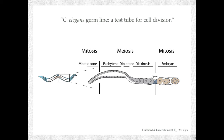C. elegans is mostly found as a hermaphrodite, meaning it can make both germ cells — both sperm and oocytes. In early development it creates sperm, stored in the spermatheca, and then as an adult it makes oocytes. This is a maternal germline. If you zoom in on one germline, you see both types of cell division: mitosis here, then cells entering meiosis, oocytes being produced, moving through the spermatheca, fertilization occurring, and then these fertilized cells — embryos — re-enter the mitotic cell cycle. This is almost a test tube for studying cell division.